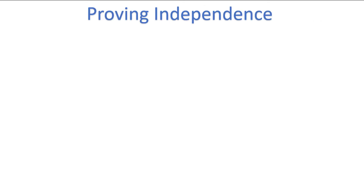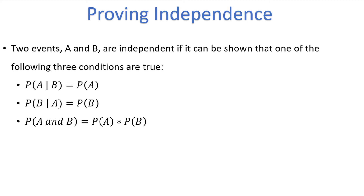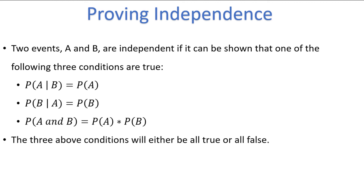Sometimes it's difficult to tell whether or not two events are independent. Thankfully, we have a method of proving that two events are independent. Two events A and B are independent if it can be shown that one of the following three conditions are true: first, the probability of A given B is equal to the probability of A; second, the probability of B given A is equal to the probability of B; and third, the probability of A and B is equal to the probability of A times the probability of B. These three conditions will either be all true or all false. So if you can prove one, you know the other two statements are true and the two events are independent. If one is false, the other two are also false and the events are dependent.